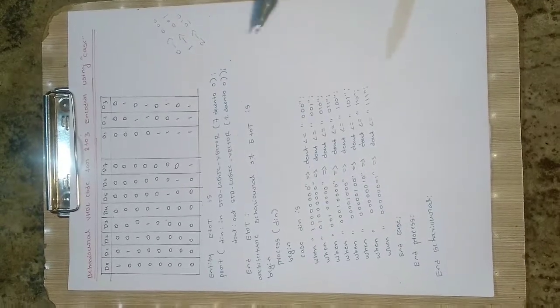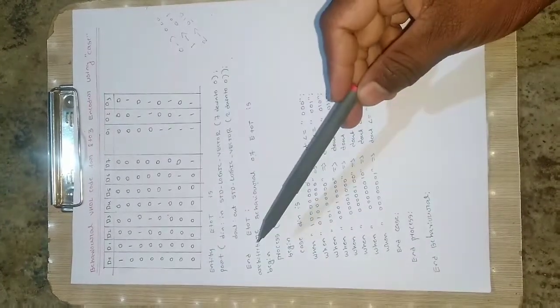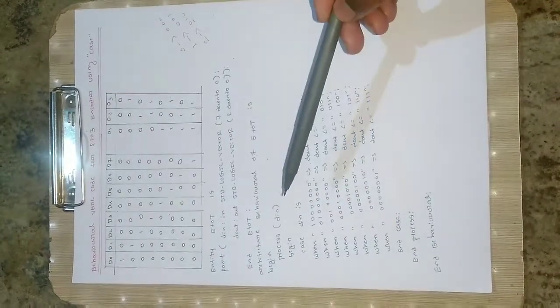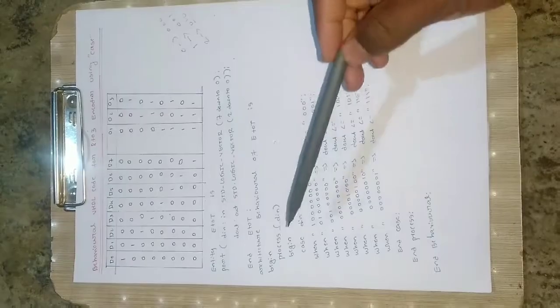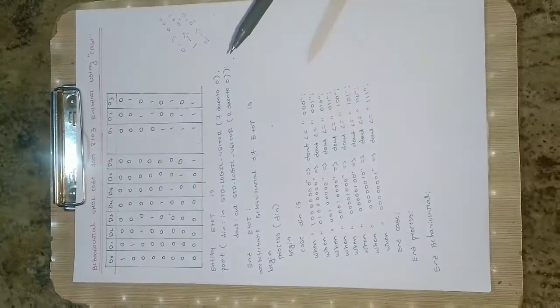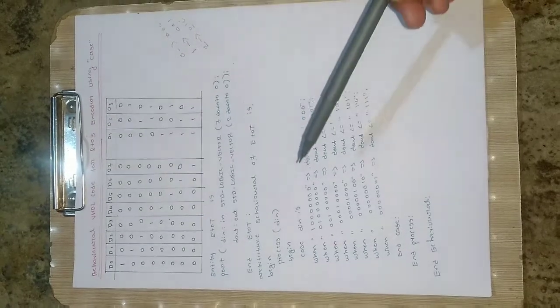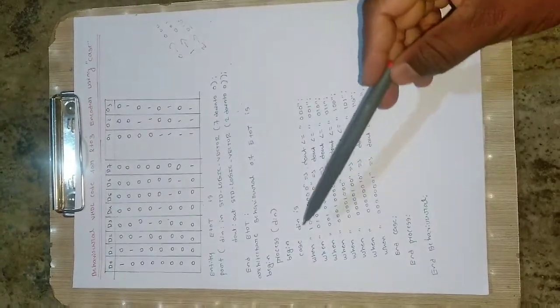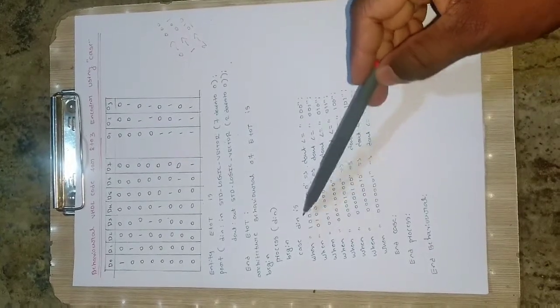Then we write the standard format: architecture behavioral of E2T. We have defined the architecture as behavioral. For this architecture it will be BEGIN, then process with input DIN, then BEGIN for the process. Then we have to use the case statement: CASE DIN IS. So the value of DIN is compared in the case statement.